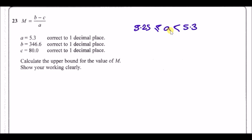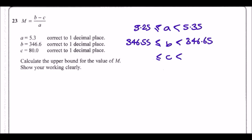We do the same for b and c. The upper bound of b is 346.65, lower bound is 346.55; for c the upper bound is 80.05 and lower is 79.95. It's just plus or minus 0.05 for everything — so ±0.05 throughout.